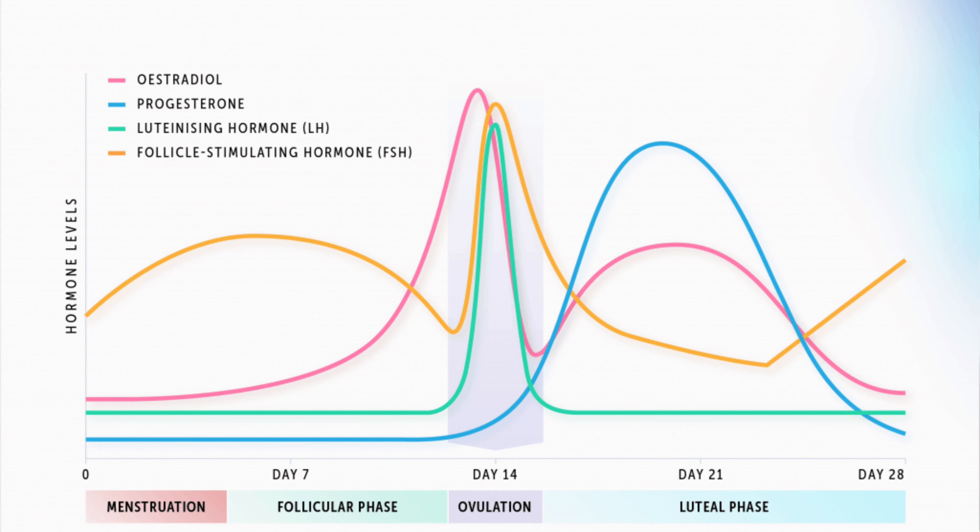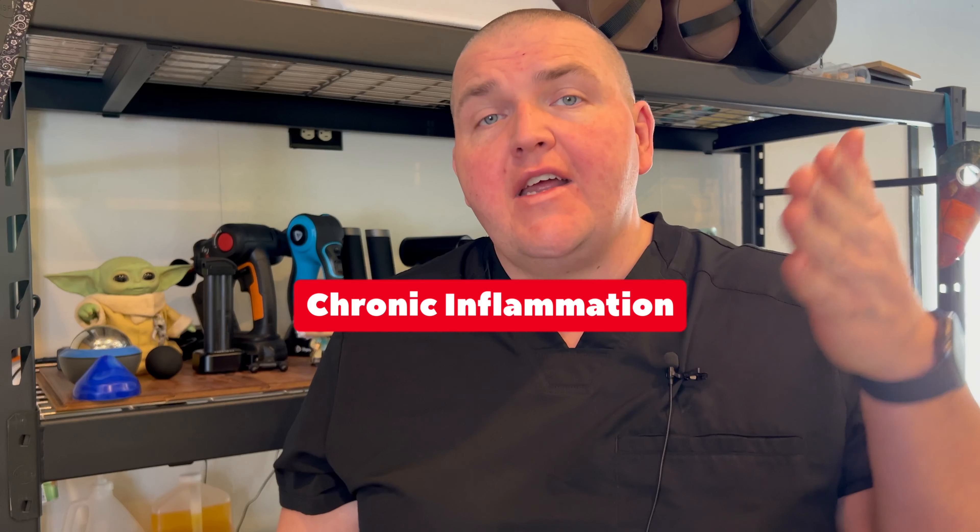Now back to endometriosis — these cells are found on the outside. They are no longer confined to the inside and will no longer be sloughed off during that time of the month. They find spots around the pelvic cavity and begin to infiltrate. They have no way out, but they still respond to the up-and-down cycle of the hormones. So they grow, they bleed, and they do it over and over again — and that is where you end up with chronic inflammation.